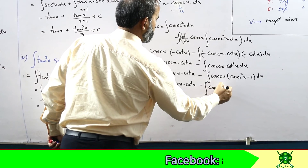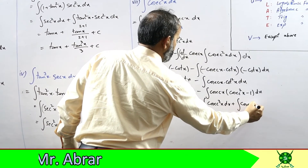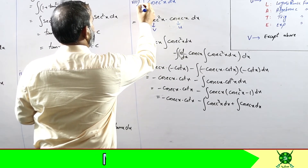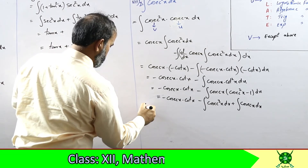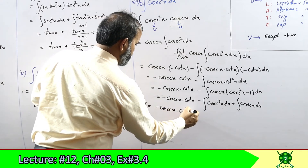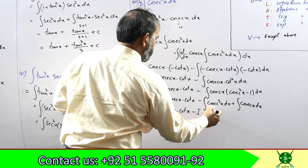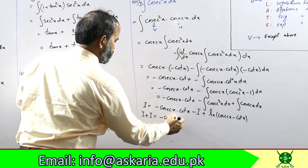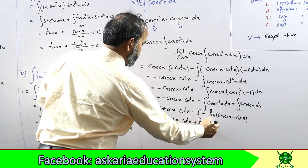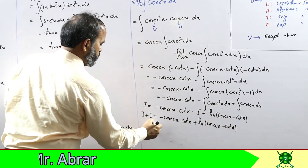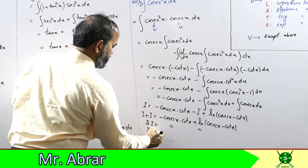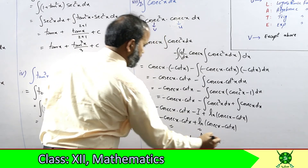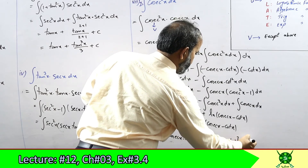यह आ जाएगा cosec³(x) dx और minus minus plus cosec(x) dx। cosec³(x) यही original question था - यह repeat हो गया, तो इसको capital I नाम देते हैं। I = minus cosec(x)·cot(x) minus I + integral cosec(x) जो कि ln|cosec(x) minus cot(x)| है। I को इधर ले जाएं: 2I = minus cosec(x)·cot(x) + ln|cosec(x) minus cot(x)|। तो final answer: (1/2)[minus cosec(x)·cot(x) + ln|cosec(x) minus cot(x)|] plus c।